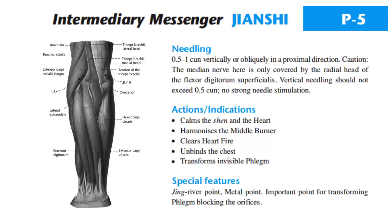PC5 is needled 0.5 to 1-cun vertically or obliquely in a proximal direction. Caution: the median nerve here is only covered by the radial head of the flexor digitorum superficialis. Vertical needling should not exceed 0.5-cun. No strong needle stimulation.